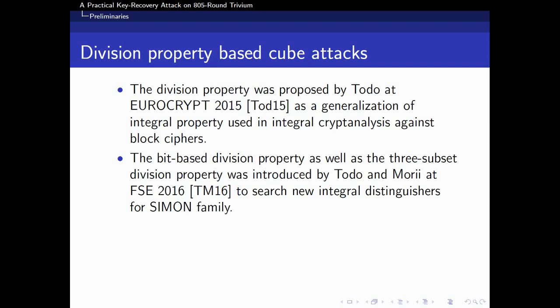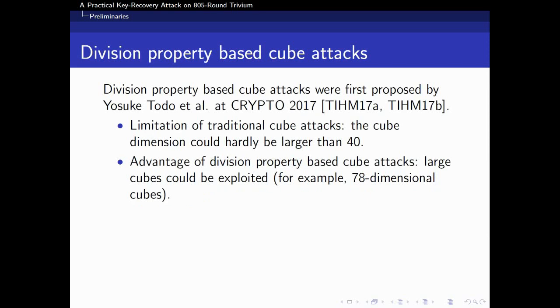Division property is an important improvement on cube attacks. Division property was proposed by Todo at Eurocrypt 2015 as a generalization of integral property used in integral cryptanalysis against block ciphers. Later, the bit-based division property as well as the three-subset division property was introduced by Todo and Morii at FSE 2016 to search new integral distinguishers for Simon family. Division property-based cube attacks were first proposed by Todo at Crypto 2017. It breaks the limitation of traditional cube attacks, where the cube dimension could hardly be larger than 40. For example, 78-dimensional cubes could be exploited in division property-based cube attacks.